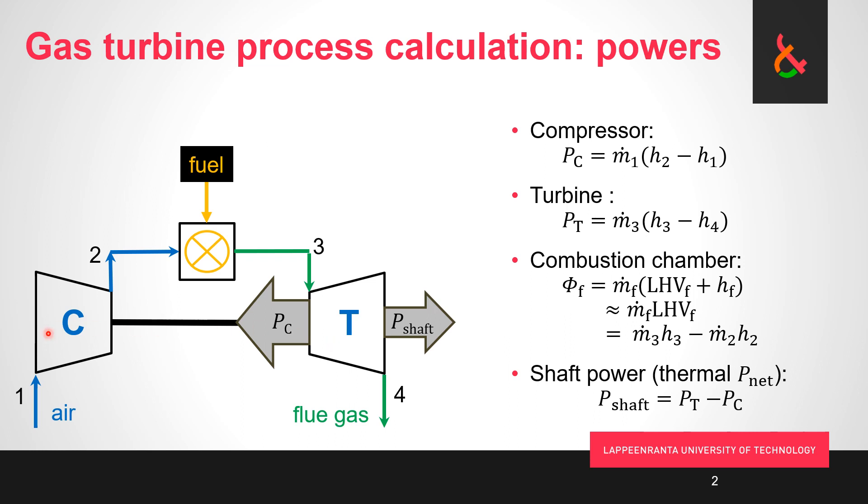Now the next question is where do we get these specific enthalpies. In the steam power plant we picked up water vapor h-s diagram and looked up where the temperature and pressure lines cross and then we read the enthalpy. Not so here, we get away with a lot simpler method.